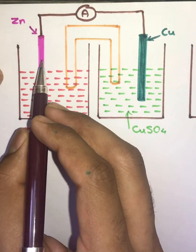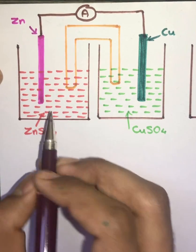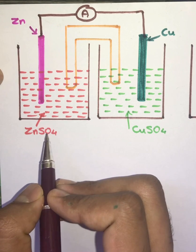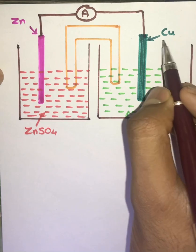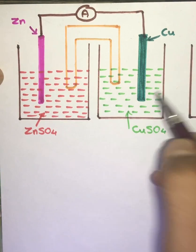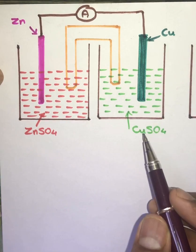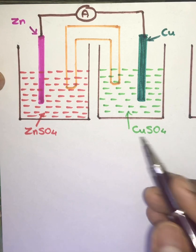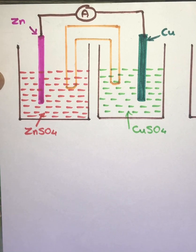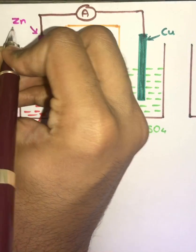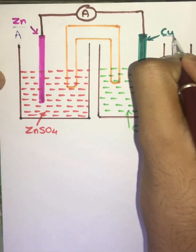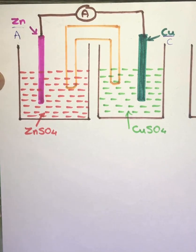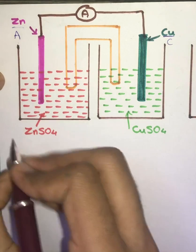For our example of a galvanic cell, I have considered a Zn electrode which is immersed in ZnSO4 solution acting as the electrolytic solution, and a copper electrode dipped in a copper sulphate solution. With the help of the electrochemical series, we found out that Zn is acting as our anode and copper is acting as our cathode.